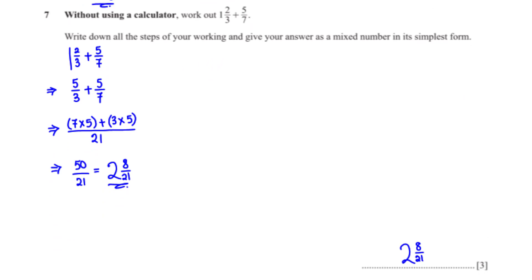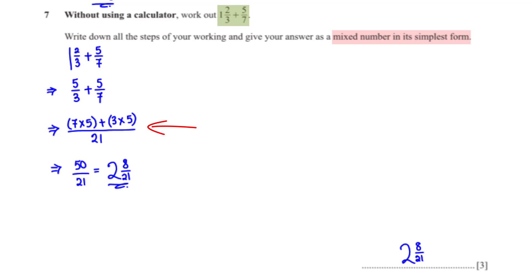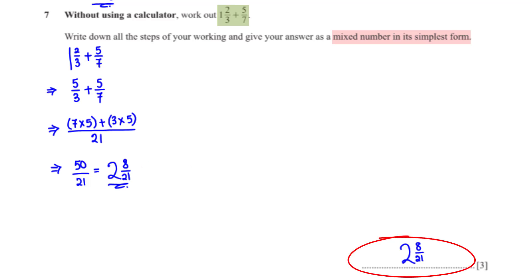Without using a calculator, work out 1 and 2 over 3 plus 5 over 7. Give your answer as a mixed number in its simplest form. First, write the mixed fraction as an improper fraction: 1 and 2 over 3 becomes 5 over 3. We now have 5 over 3 plus 5 over 7. The LCM of 3 and 7 is 21, giving us 35 plus 15 over 21, which is 50 over 21. Converting to a mixed fraction gives 2 and 8 over 21.